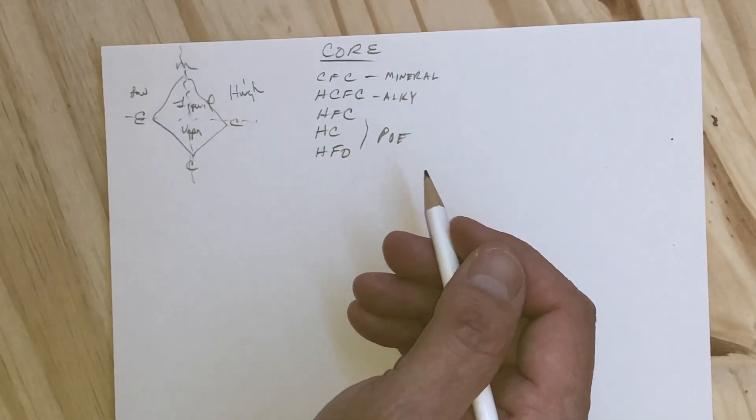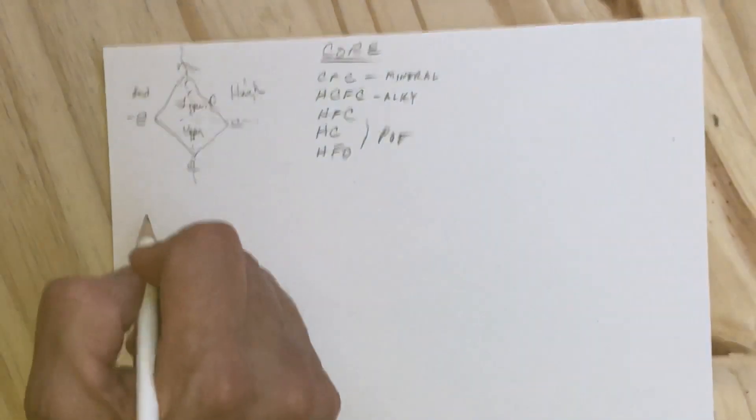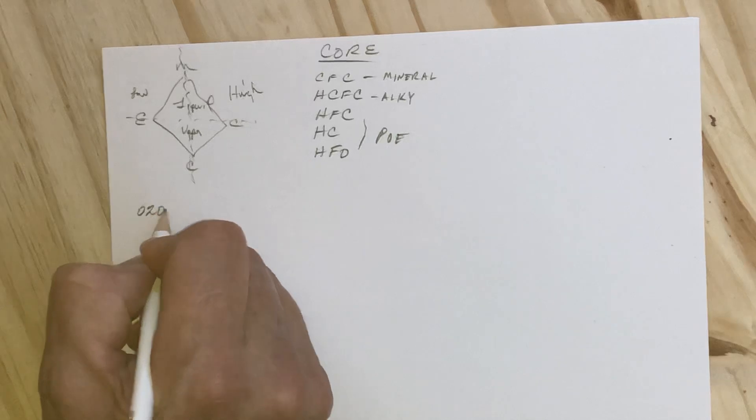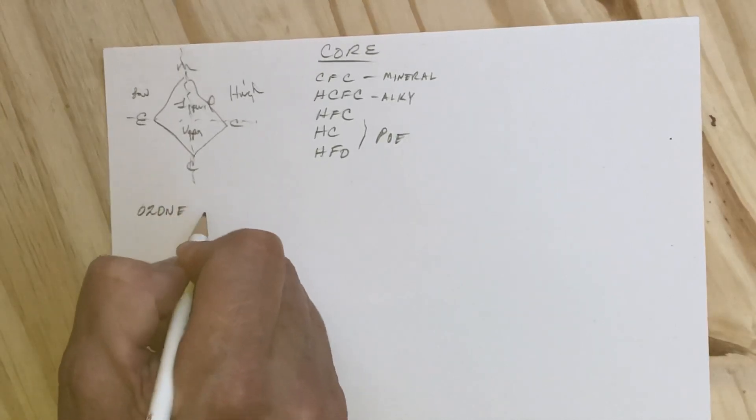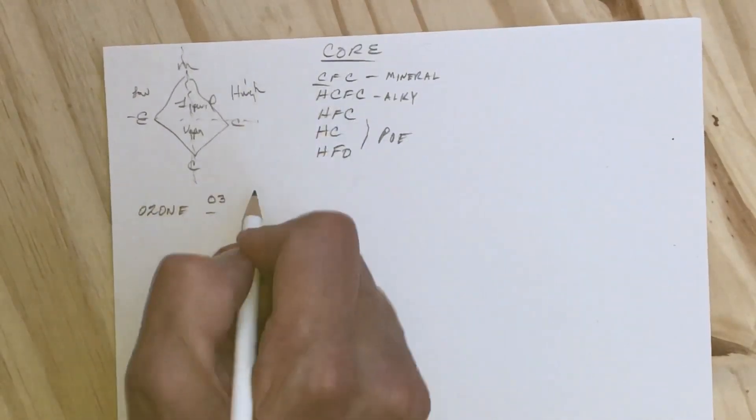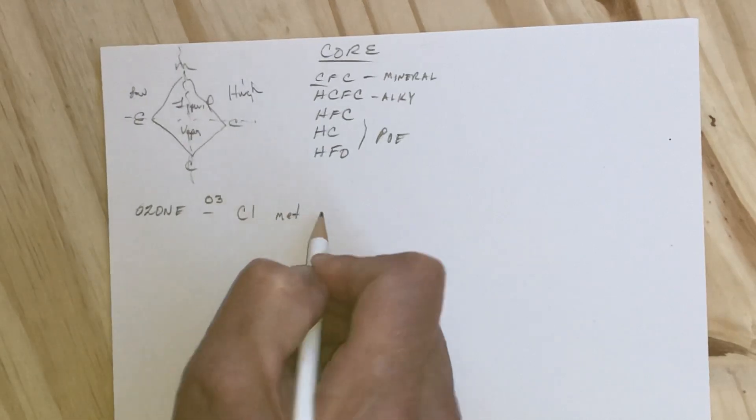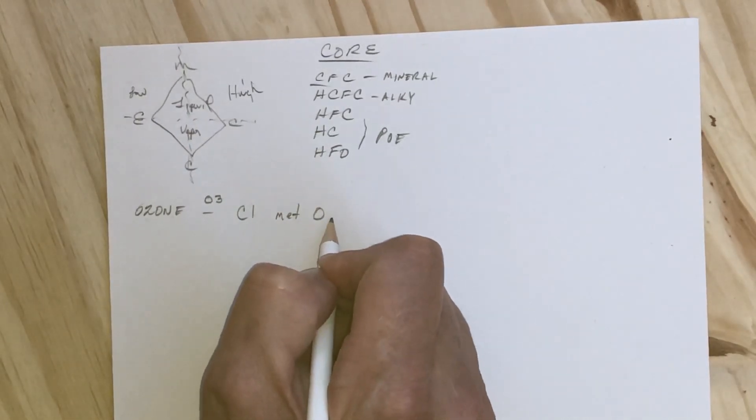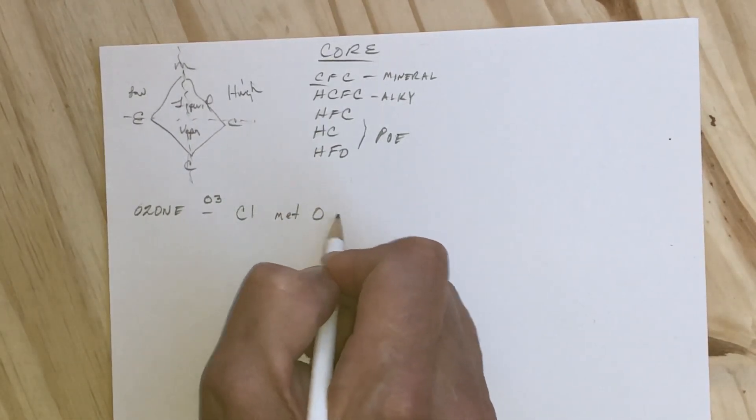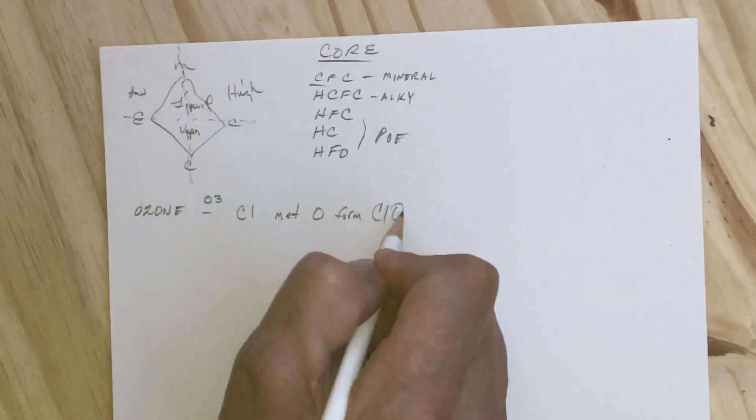You should know that ozone is the primary reason we're talking about all this. Those O3 molecules, when the chlorine from the chlorofluorocarbon met the O3, it broke off one of the O's and formed chlorine monoxide, which is what the scientists first found in the atmosphere.